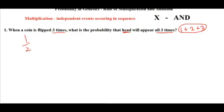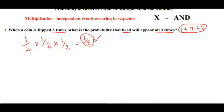When you flip the coin a second time you have a one by two possibility, and the third time also one by two. So what we need to do is multiply all the probabilities: one by two × one by two × one by two = one by eight. So one by eight is the probability of getting head all three times when I flip the coin.